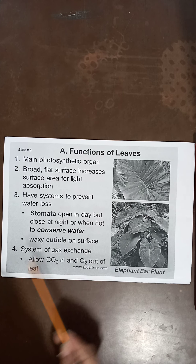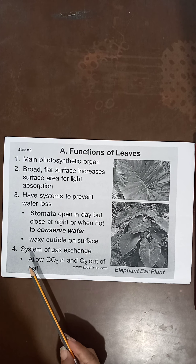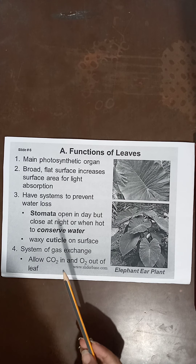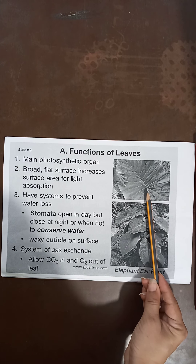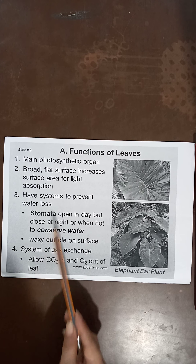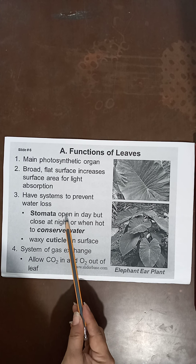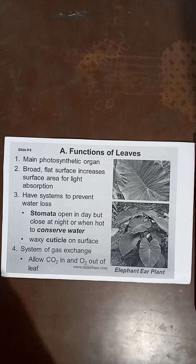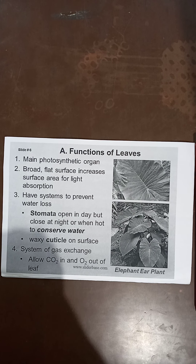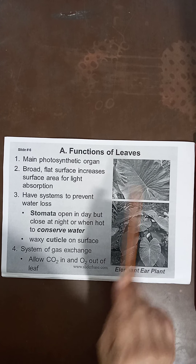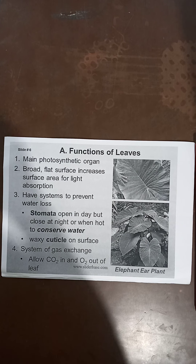Leaves also help in the exchange of gases. We use our nostrils to breathe in and breathe out, whereas plants use small pores present in the leaves called stomata. These are small holes through which an exchange of gases takes place during breathing in and breathing out, and also during photosynthesis when carbon dioxide enters and the chemical reaction with water takes place.